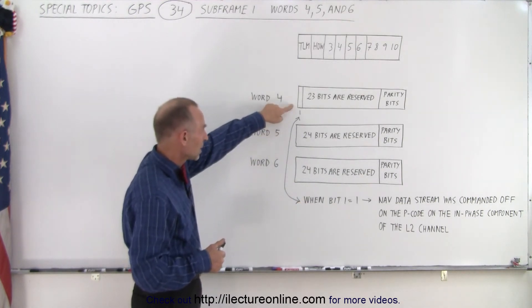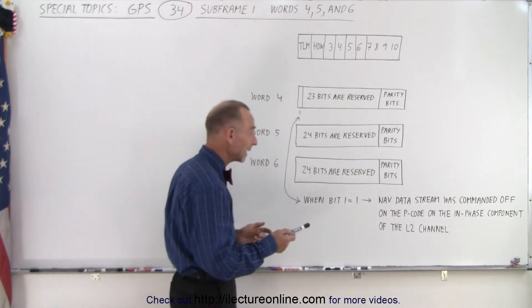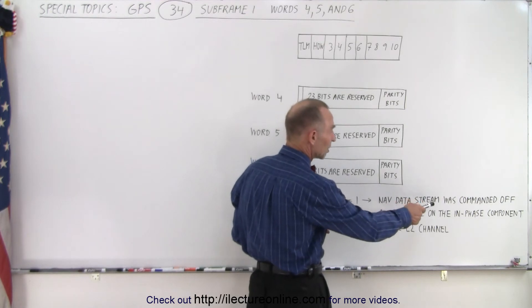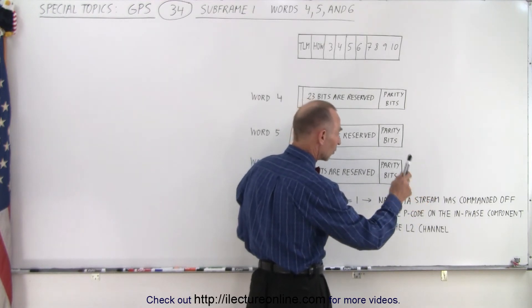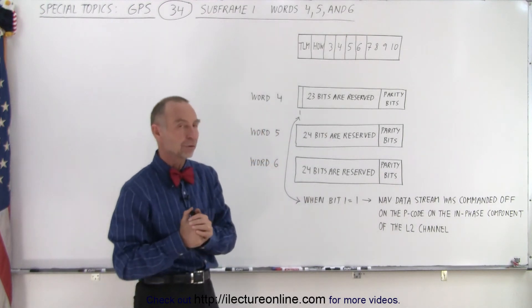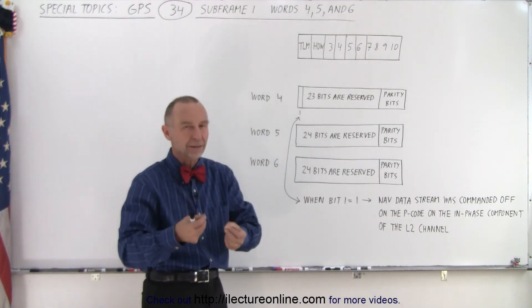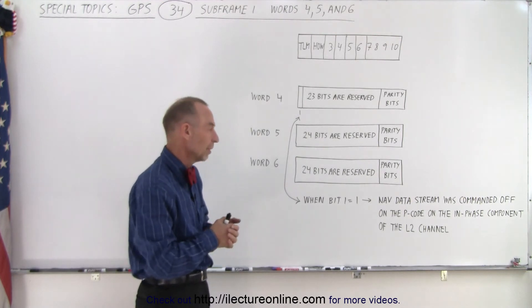But what about this one bit right here in word 4? Well when that bit is set equal to 1, what that indicates is that the navigation data stream was commanded off on the P code on the in-phase component of the L2 channel. What that means is that the L2 channel is transmitted without P code content involved.